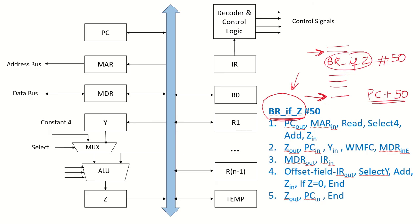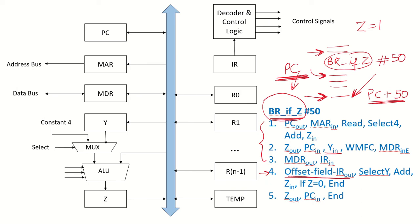'Branch if Z' means we check the zero flag. If the zero flag is 1, we go to the target address; otherwise we execute the next instruction. So if the condition is not satisfied we use the current PC contents; if satisfied we go to the target address. In the fourth clock cycle we do the same operations as before: take out the offset field from IR, select Y, add and put in Z.